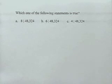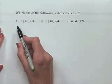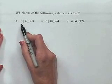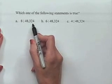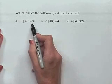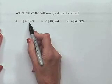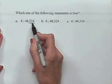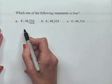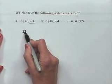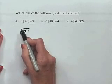Now let's look at a problem where we're going to use tests for divisibility. Which one of the following statements is true? In our first part, Part A, this is read: 8 divides 48,324. To determine whether 8 divides a number, we can look at the last three digits of the number. If 8 divides those last three digits, then it will divide the entire number. So when we take 324 and divide by 8,